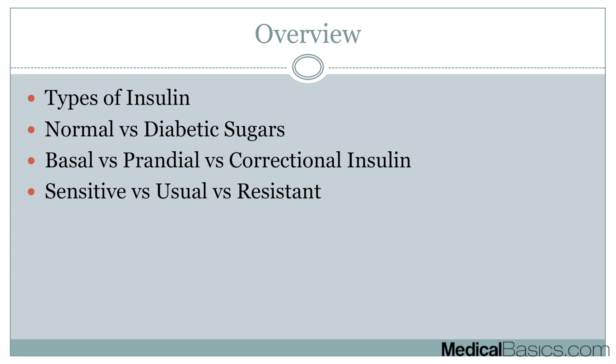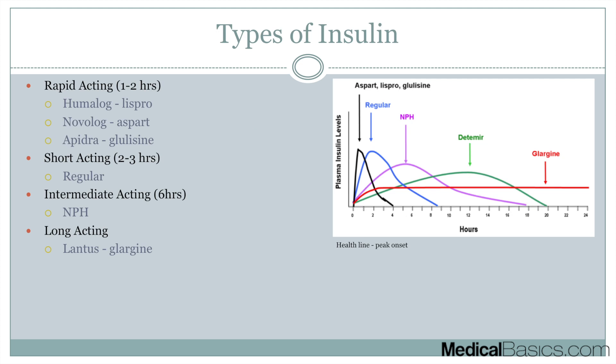We're going to talk about the different types of insulin, diabetes in general, normal versus diabetic sugars, and all the different types of insulin — touching briefly on dosing between sensitive, usual, and resistant. In another video, we'll talk about how to change insulin dosing and how to give a starting dose for sliding scale insulin and how to adjust it.